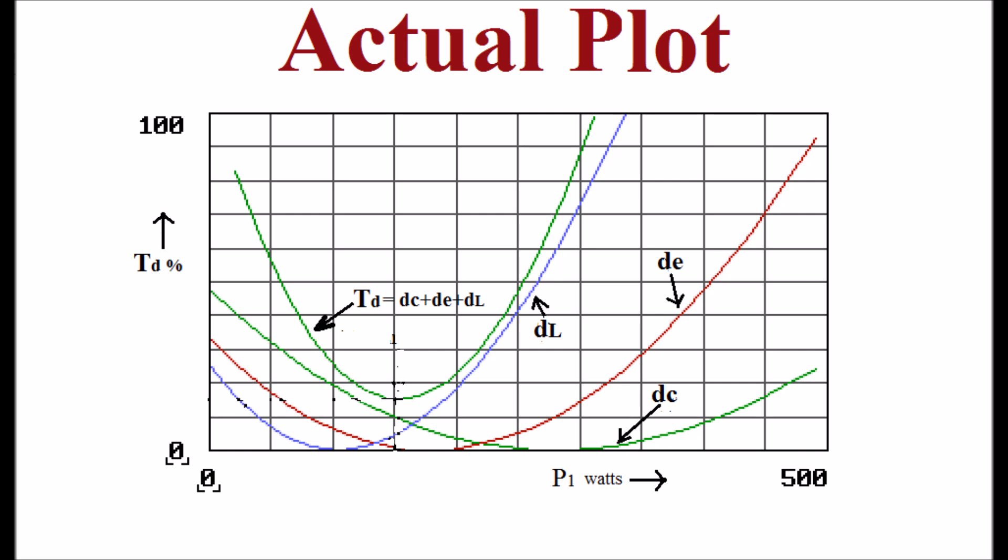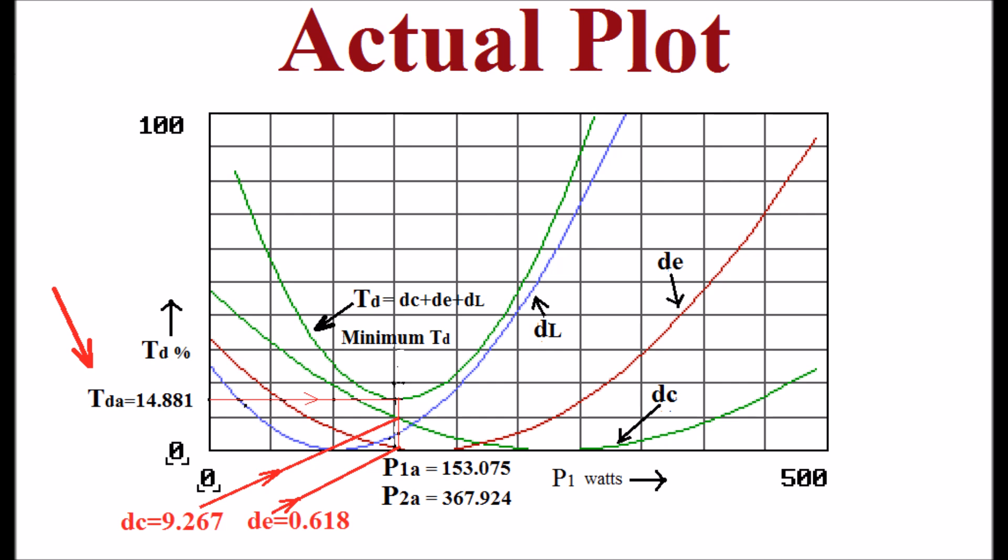Deviation of each objective function from its optimal value and the percentage total deviation also shown in the display. The minimum percentage total deviation is 14.881 from the graph. The corresponding values of P1, P2 are 153.075 and 367.924 respectively. The cost deviation is 9.267, emission deviation is 0.618, loss deviation is 4.995. This is the best solution.